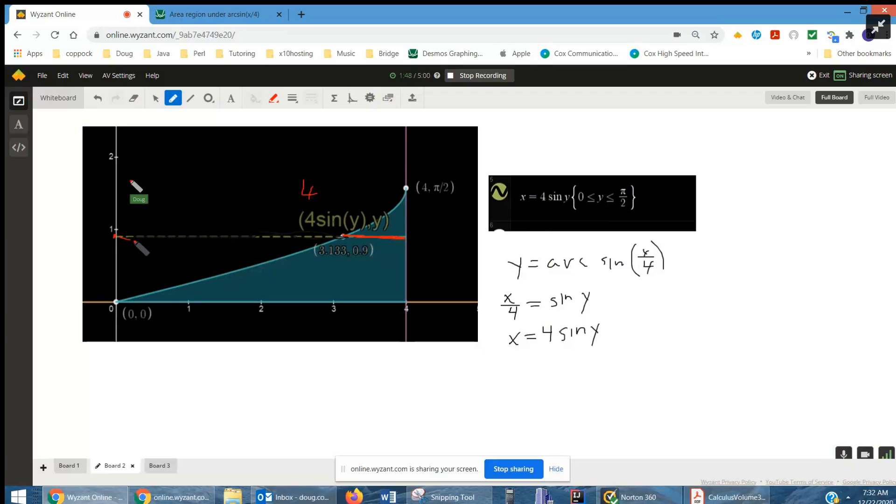Take away this distance, which is always 4 sine of y. And we have to subtract that to get the length of this rectangle.